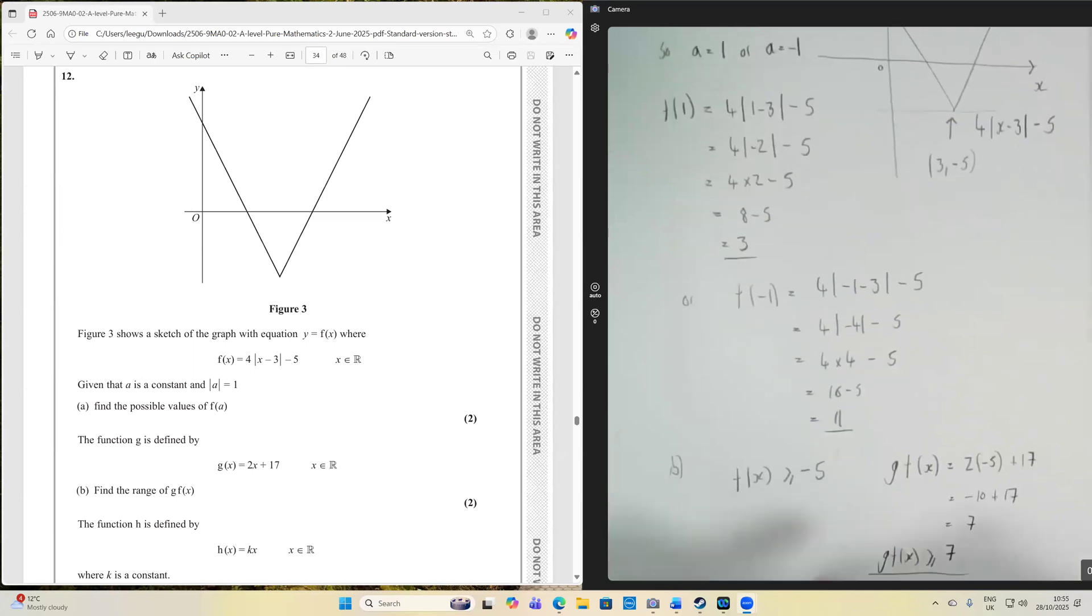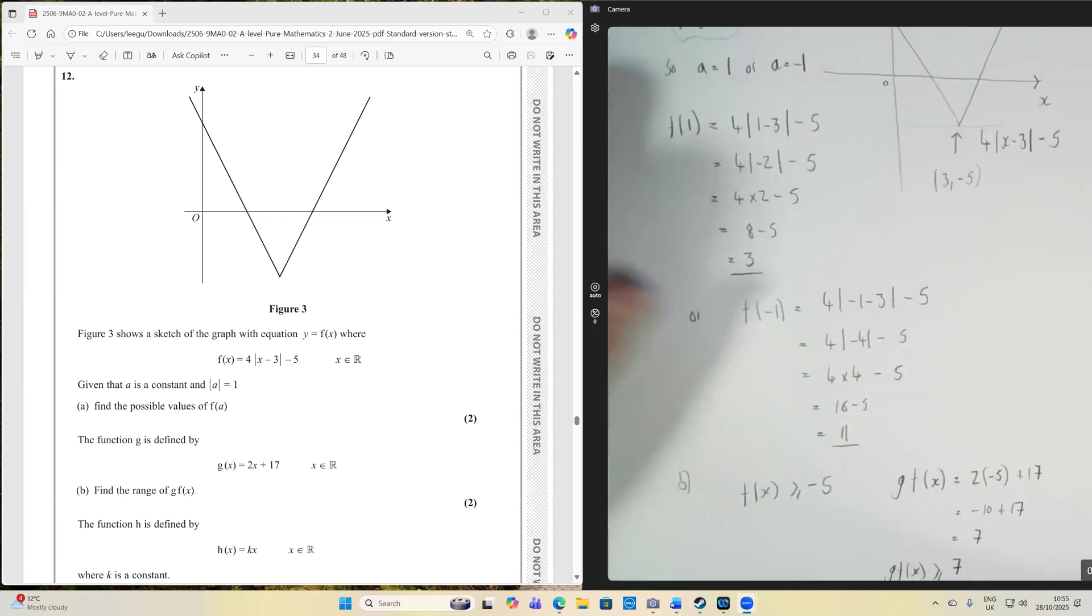And then f of x could be minus 1. So we have 4 times minus 1 minus 3. Minus 1 minus 3 is minus 4. The modulus of minus 4 is 4. 4 times 4 is 16. 16 take away 5 is 11. So that's part a done. Those are our two different values, and we just needed to work out f of 1 and f of minus 1.